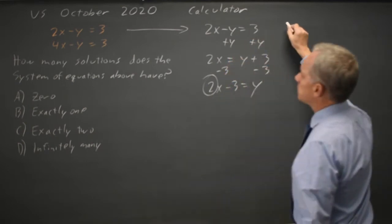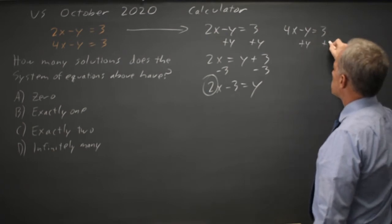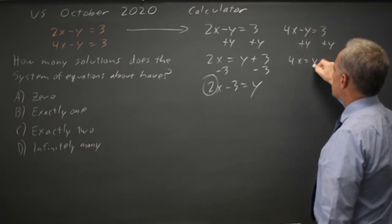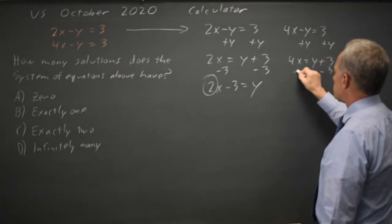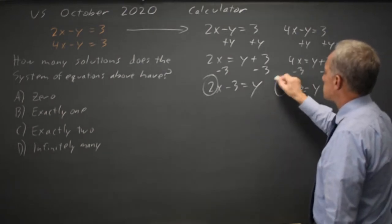For the second equation, similarly, 4x equals y plus 3, subtract 3 from both sides, and that's y equals 4x minus 3. The slope is 4.